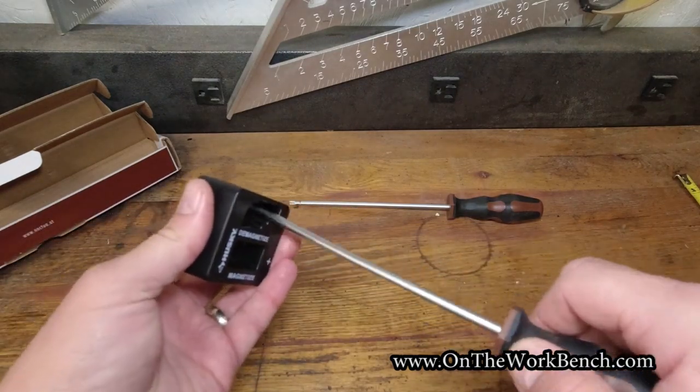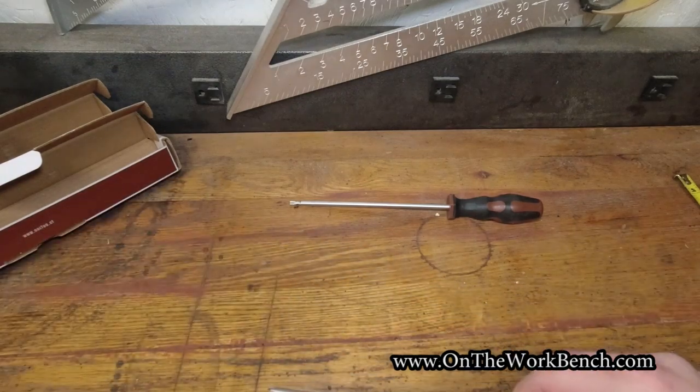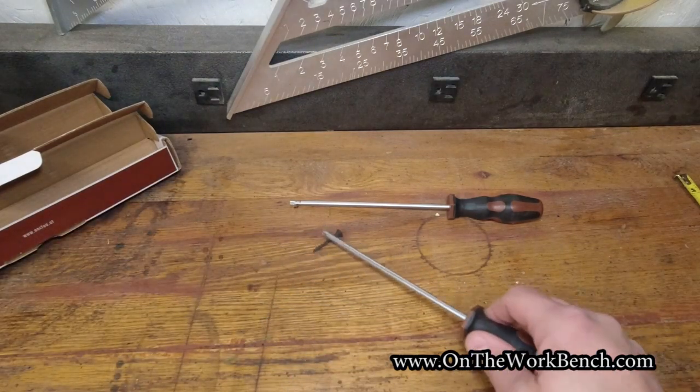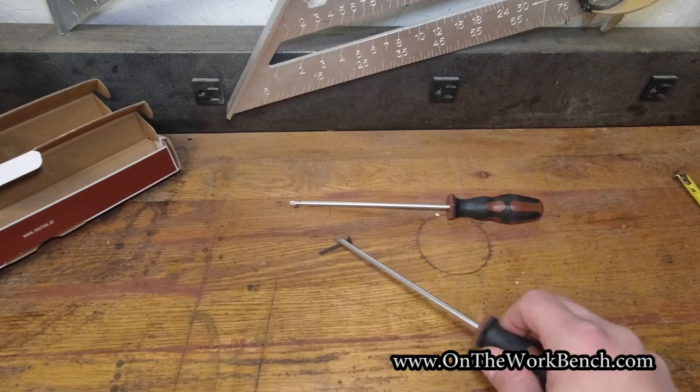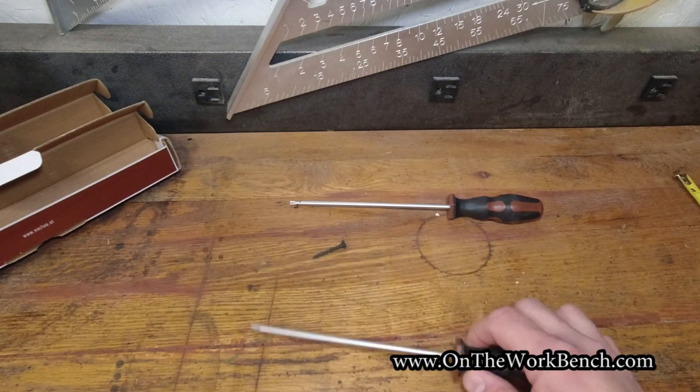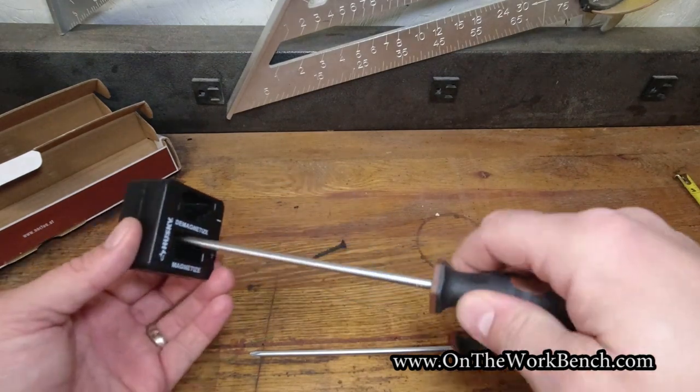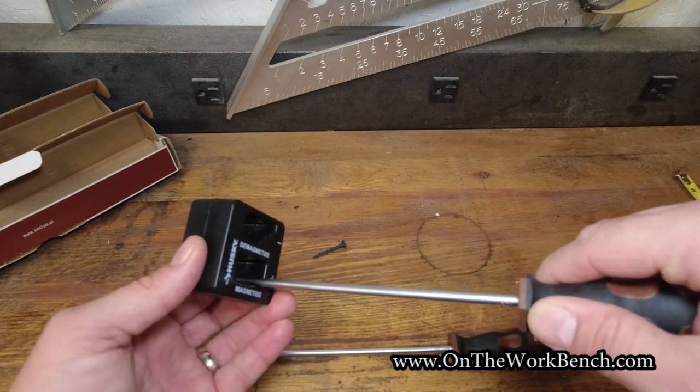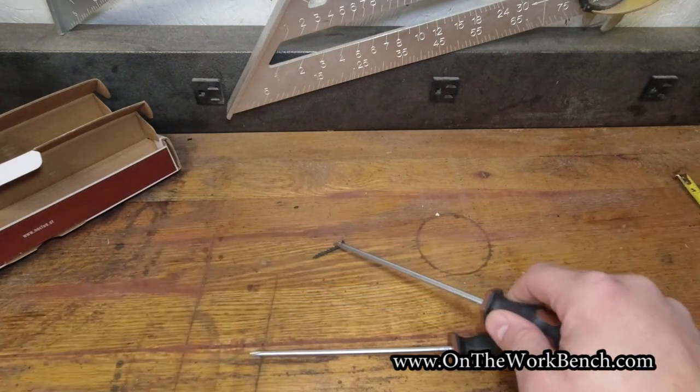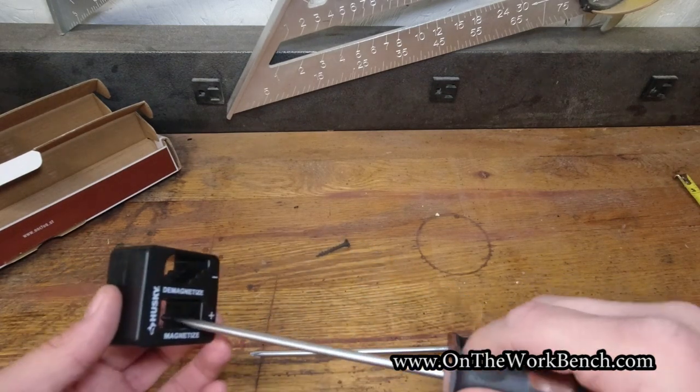We'll go ahead and put this into the demagnetization end. And now you can see the magnetization is gone. We'll try that with the T20. We'll go ahead and put it into the magnetizing side.